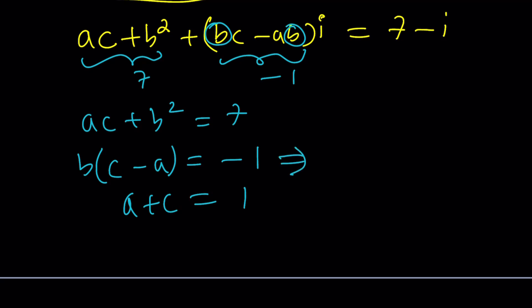So, it's kind of nice that we can solve it. So, from here, you can isolate C minus A and write it as negative 1 over B. And then we know that C plus A, which is the same as A plus C, by the way, is equal to 1. By adding these and subtracting these equations, we can get C and A in terms of B, and then plug those in here.